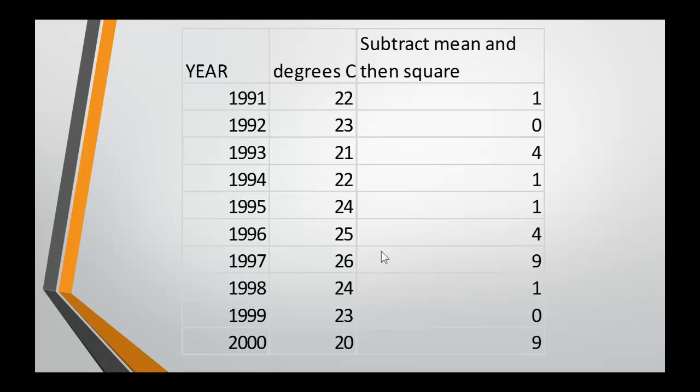Our next step is to subtract the mean from each year's reading and then to square the difference. Note that by squaring the difference all our answers here are going to be positive.